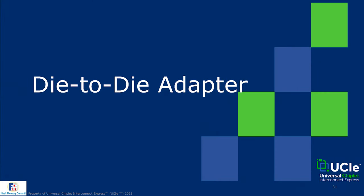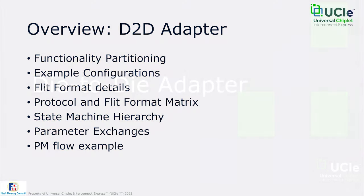Now we go deeper into the die-to-die adapter, where we'll spend most of the session. Topics covered include functionality partitioning, example configurations, detailed FLIT format coverage, optimized UCIe-defined FLIT formats, a summary matrix of protocols versus FLIT formats showing what's mandatory and optional, and the state machine hierarchy for coordinating power management and error escalation across multiple layers.